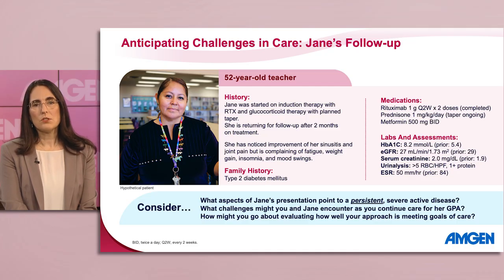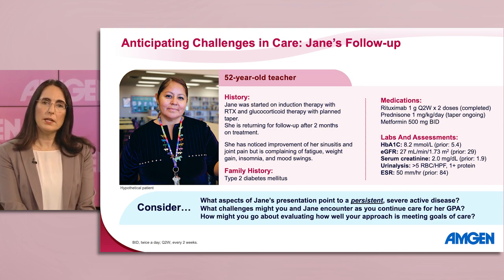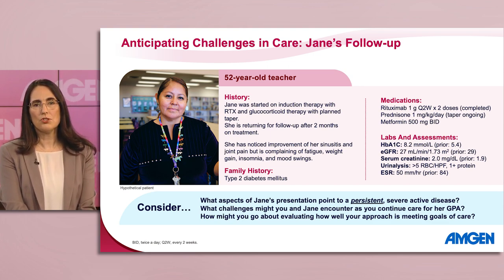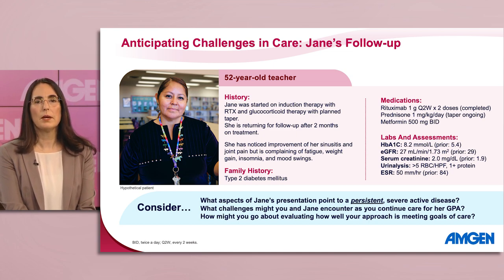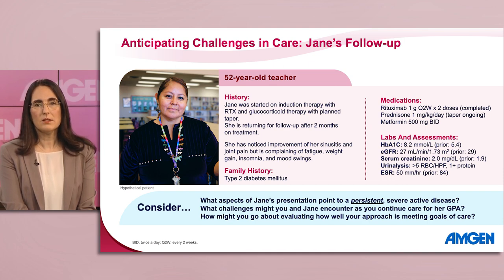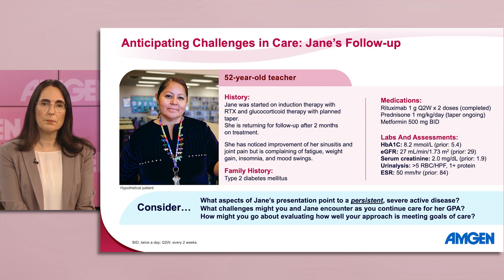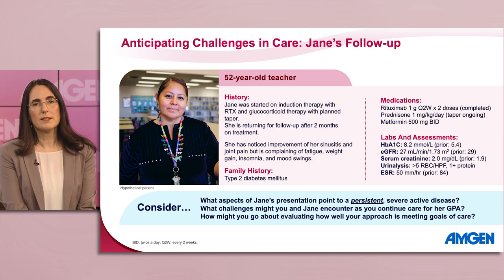Now that we have had the chance to review common approaches and challenges in management, let's take a look back at our patient Jane to see how this all comes together. After diagnosis, Jane was started on induction therapy with a combination of rituximab, two doses of one gram each, two weeks apart, and prednisone one milligram per kilogram per day, with a planned gradual taper to no more than five milligrams by week 22. Jane is returning after two months on treatment, reporting improvement in her sinus and joint symptoms, but continues to have fatigue. She has also noticed weight gain since starting glucocorticoids, experiencing mood swings and insomnia, and has been having difficulty controlling her blood sugar.